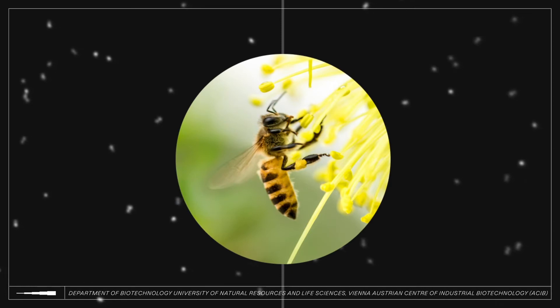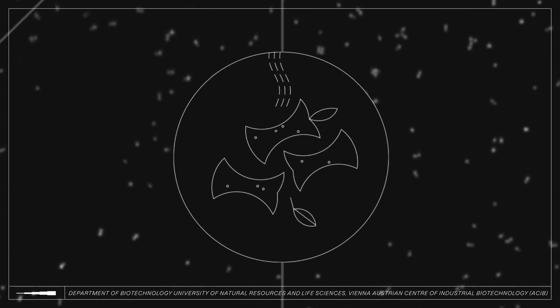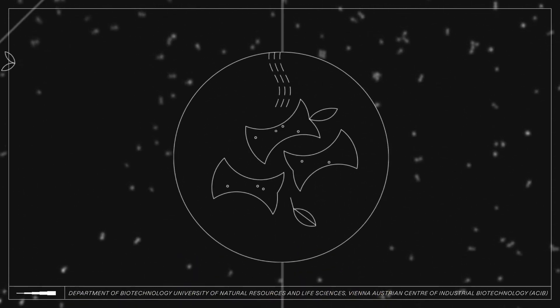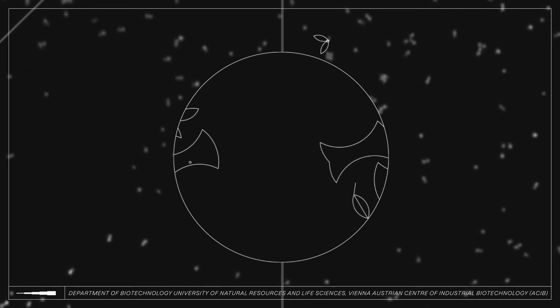However, they cannot live on love alone, and so they help each other to find their food. When yeasts ferment sweet juices, they produce various aroma compounds, which direct insects to the fermenting sugar sources from afar.